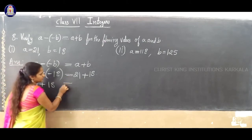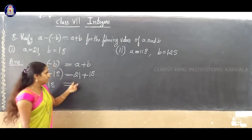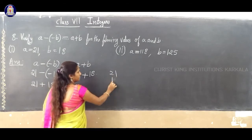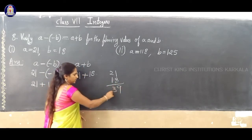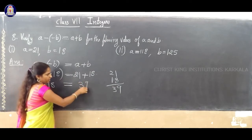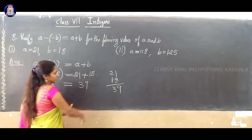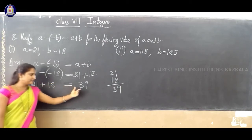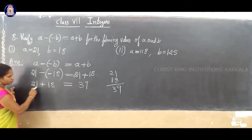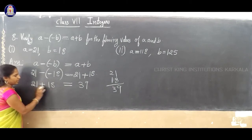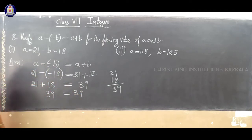So, the left-hand side becomes 21 plus 18. Adding: 1 plus 8 is 9, 2 plus 1 is 3, so the answer is 39. The right-hand side is also 21 plus 18, which equals 39. So, LHS equals RHS. We have verified the answer. The key rule: minus into minus gives plus.